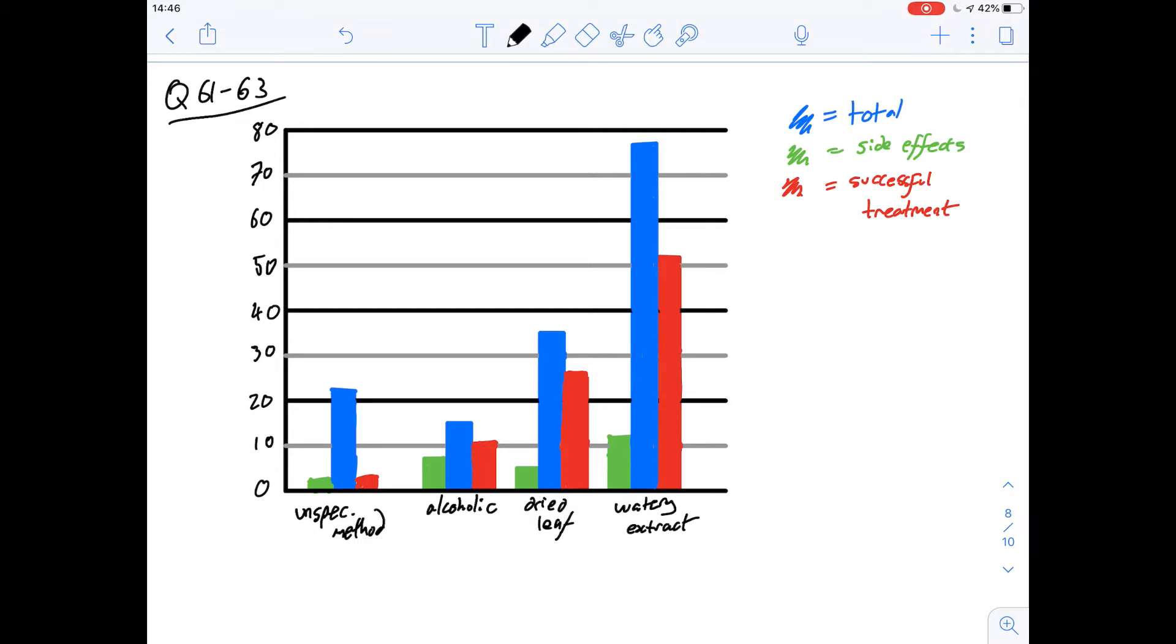So we've got the different preparations at the bottom and then on the y-axis we've got our number of patients. So I've copied out the graph that they have here and we'll start off with question 61.